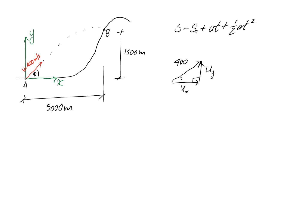The angle theta is unknown, and that's what we're trying to determine in the question. So we can write out our components in terms of theta: Ux equals 400 cos theta, and Uy equals 400 sin theta.